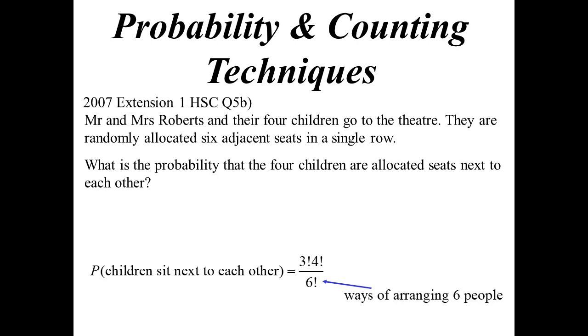On the top of the fraction, I've got three factorial, four factorial. So where did that come from?